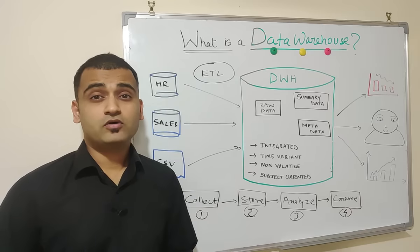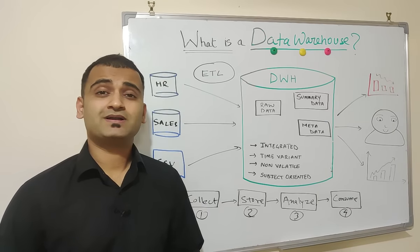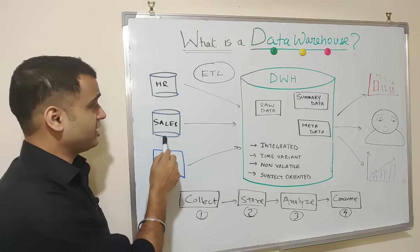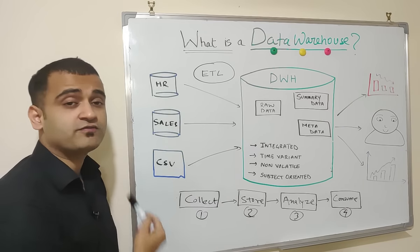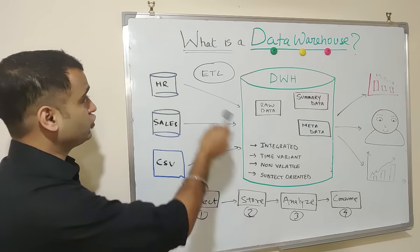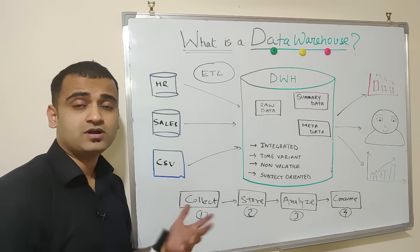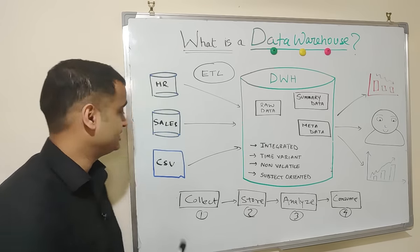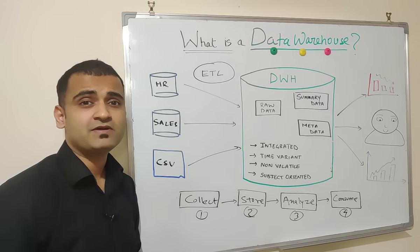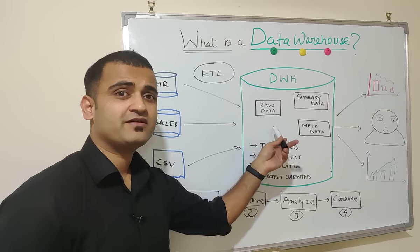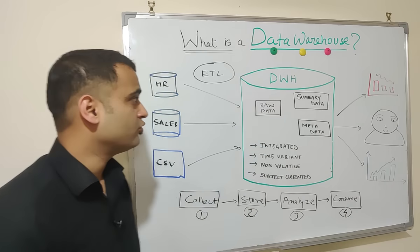Similar to a warehouse, a data warehouse is nothing but a centralized location where all your enterprise data from your disparate database systems and file systems gets stored for further analysis. Suppose you have a system called HR or a system for storing your sales transaction or flat files coming from different sources. All this data is stored into your central data warehouse.